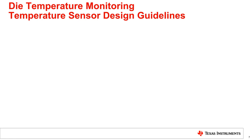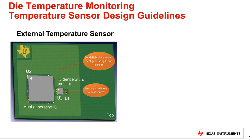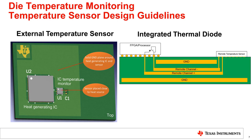Just as important as choosing what type of temperature sensor to use is how to design it into the system. There are different guidelines to follow whether you are monitoring the die using an external temperature sensor or an integrated thermal diode. When using an external temperature sensor, thermal conductivity is very important — the sensor should be placed as close as possible to the die being monitored. Both devices should share a solid ground plane, and perforations or slits in the PCB between the two devices should be avoided. When using a remote temperature sensor, the signal integrity of the traces is more important. The traces from the remote junction must be routed in an inner copper layer and shielded by using ground or power planes. The traces of the thermal diode should be routed in parallel as shown in the figure. If using cabling to connect the thermal diode, shielded twisted pair cabling should be used to avoid signal noise on the line.